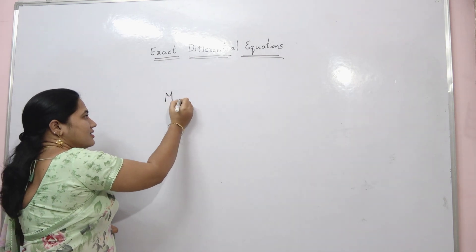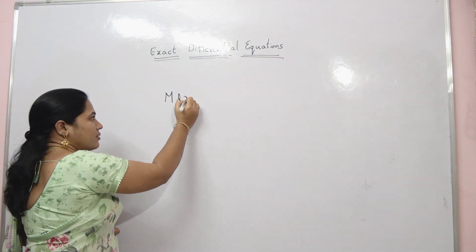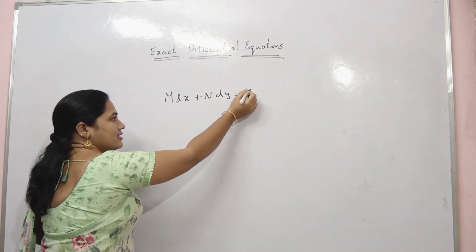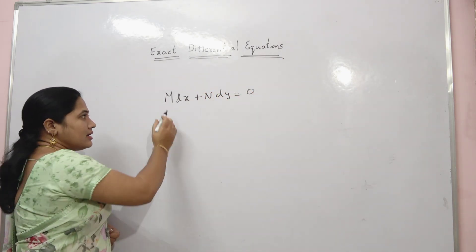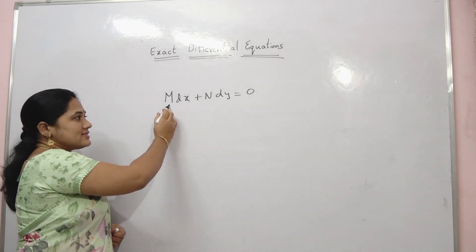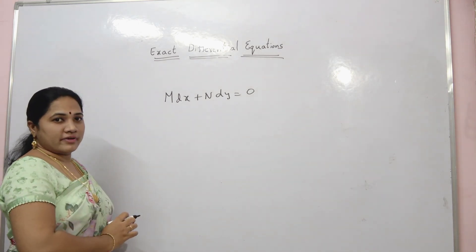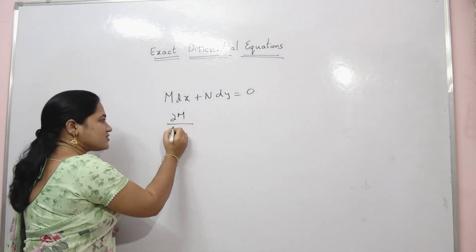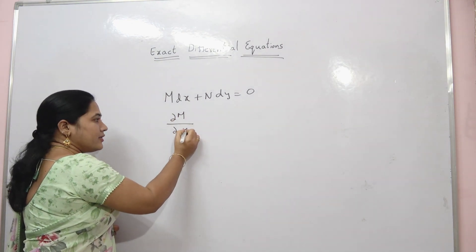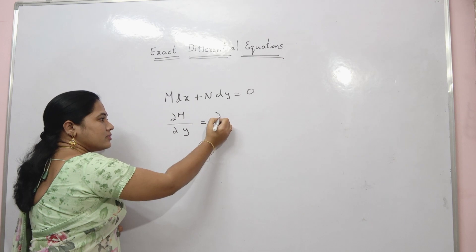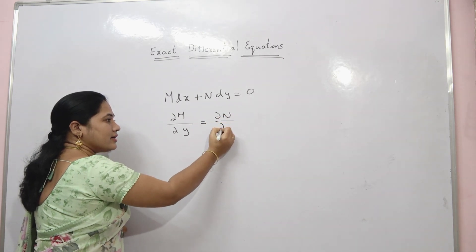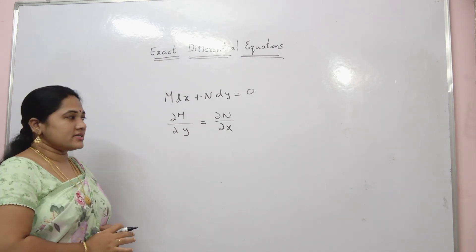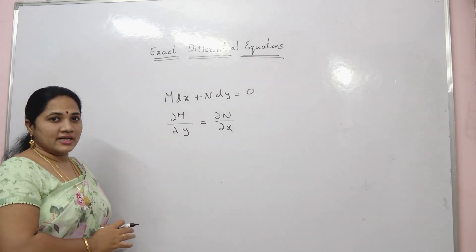If a differential equation is in the form M dx plus N dy equals to 0, where M is a function of x and y and N is a function of x and y, and it satisfies ∂M/∂y equals to ∂N/∂x, then the differential equation is said to be an exact differential equation.